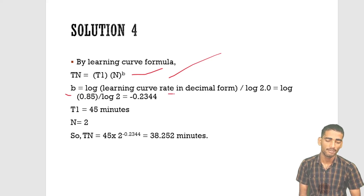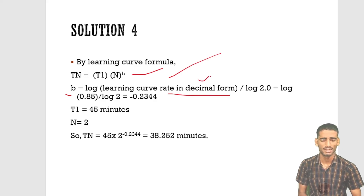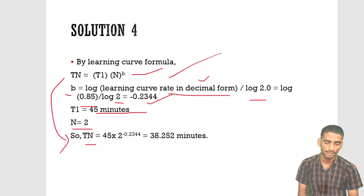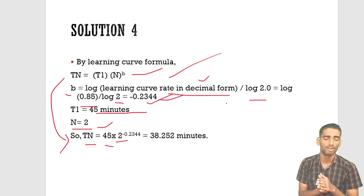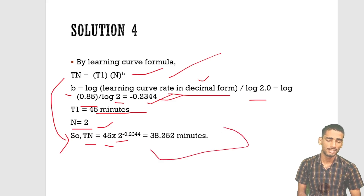So b = log(0.85) / log(2). With T1 = 45 minutes and n = 2, substitute into Tn = T1 × n^b. After calculating b and substituting all values, you get T2 ≈ 38.25 minutes. This completes the learning curve model example.